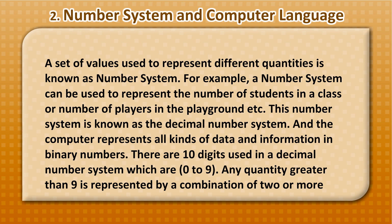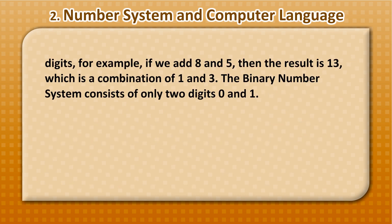There are 10 digits used in a decimal number system which are 0 to 9. Any quantity greater than 9 is represented by a combination of 2 or more digits. For example, if we add 8 and 5, then the result is 13, which is a combination of 1 and 3. The binary number system consists of only 2 digits, 0 and 1.